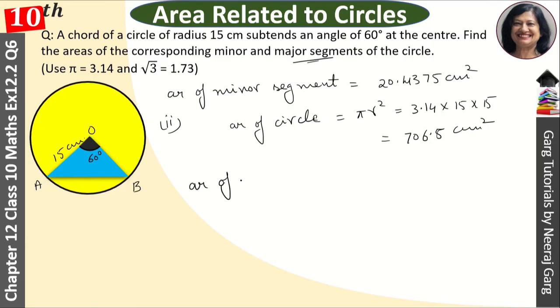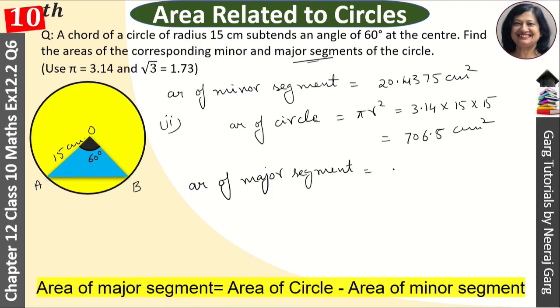And now we have to remove area of major segment. Area of major segment is the formula of area of circle minus area of minor segment.